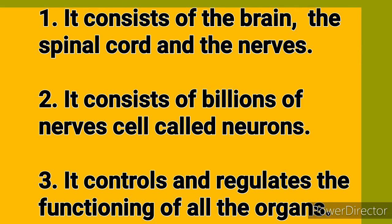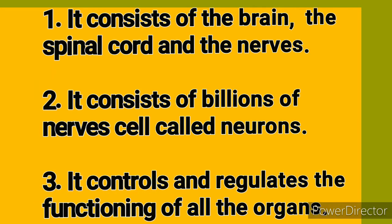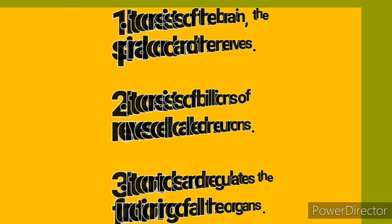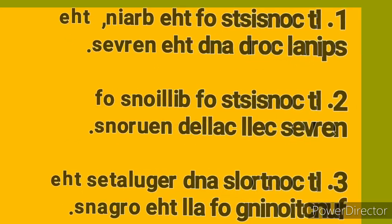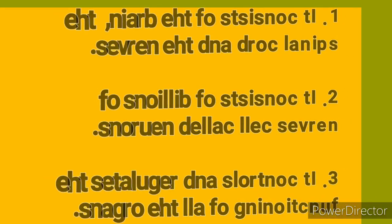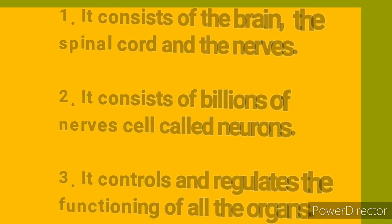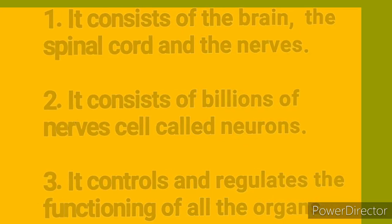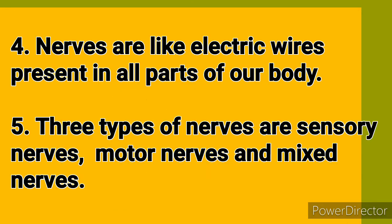There are three types of nerves. The first is sensory nerves, the second is motor nerves, and the third is mixed nerves. Sensory nerves bring messages from the sense organs to the brain. Motor nerves carry messages from the brain or spinal cord to the muscles.